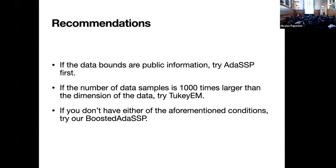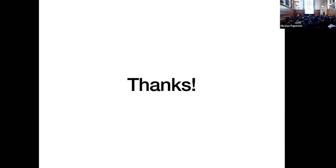Our recommendation is: if the data bounds are public information, try ADSP first — it's a one-shot linear regression algorithm and really good. If the number of data samples is a thousand times larger than the data dimension as recommended by their paper, try 2Key EM — it's a fantastic algorithm with a lot of data points. If you don't have either of these conditions — you don't know the data bounds and don't have a lot of data samples — then try our Boosted ADSP. Thank you.